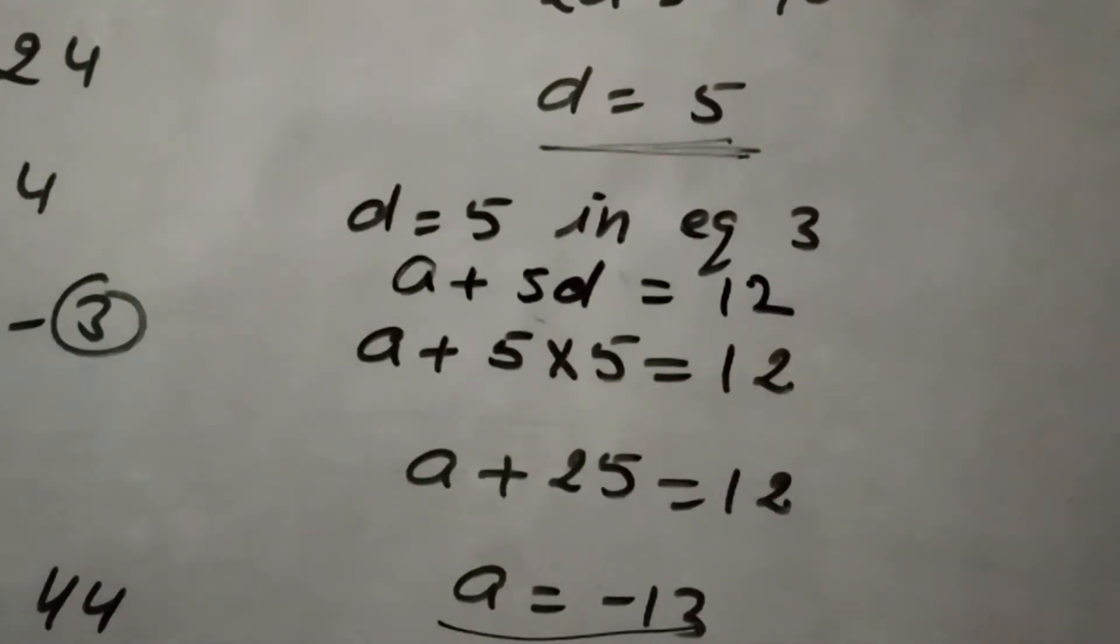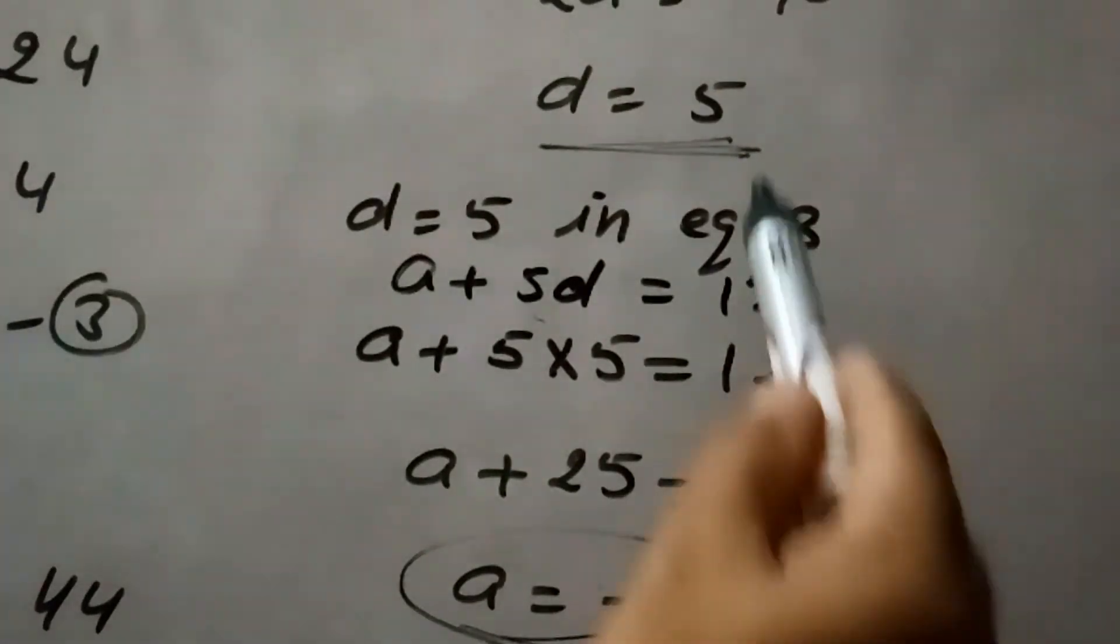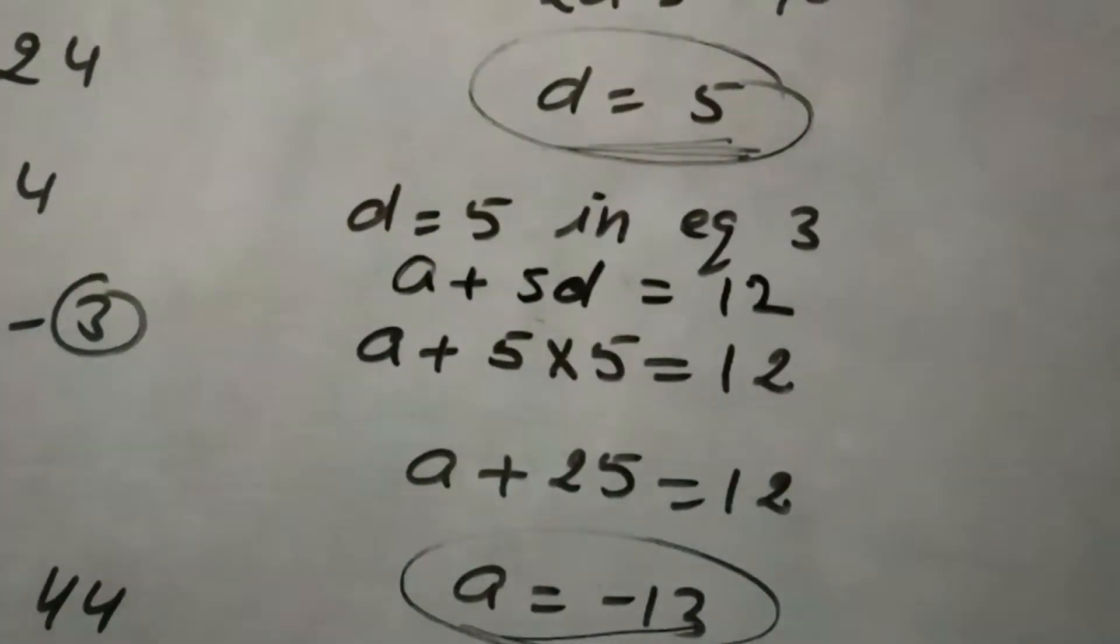So here now A, meaning the first term, is minus 13, and common difference is 5. So we can calculate. Now we can find the AP here.